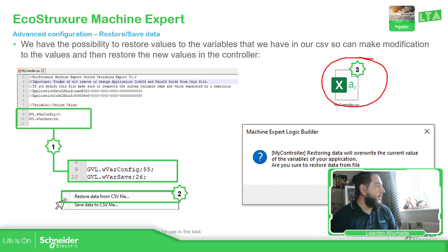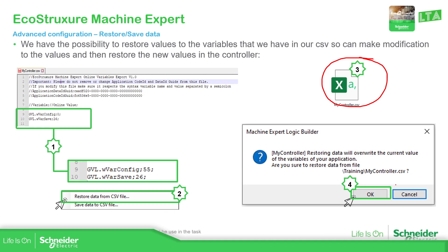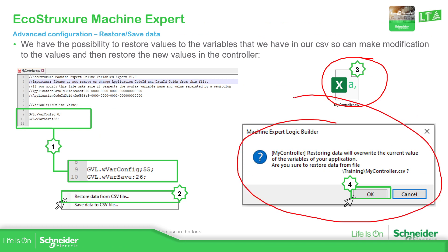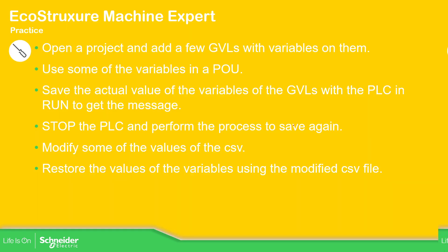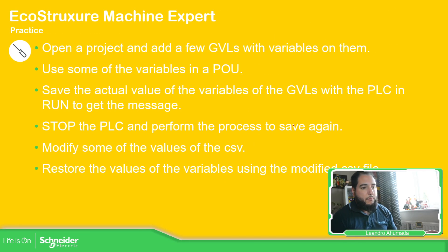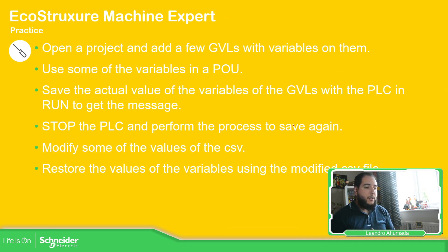Once you click on restore, select the file, and you should be able to see a confirmation message to send the new information. So what we're going to do is open one of the projects, connect to the PLC online, save the files, and see what we can do.